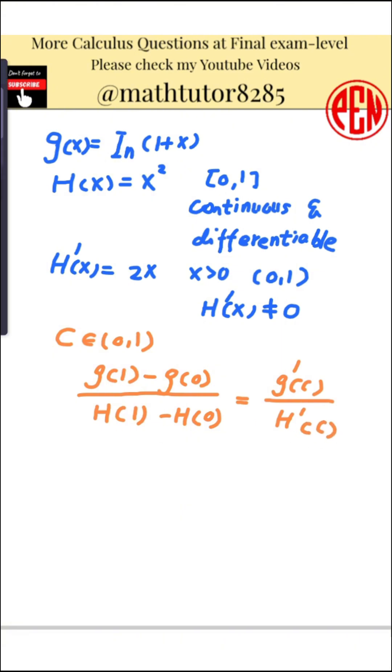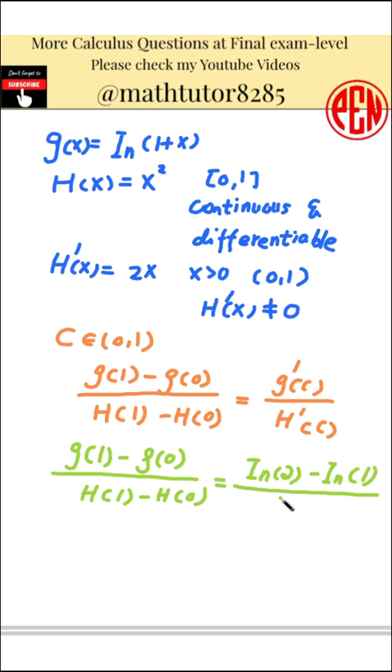Now let's compute the left-hand side, that is, the constant ratio. The value of g at 1 is the natural logarithm of 2. The value of g at 0 is the natural logarithm of 1, which is 0. The value of h at 1 is 1 squared, which is 1. The value of h at 0 is 0 squared, which is 0. So the entire ratio becomes natural logarithm of 2 divided by 1, which is simply natural logarithm of 2.